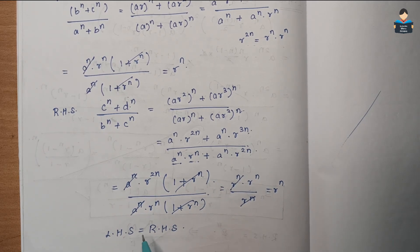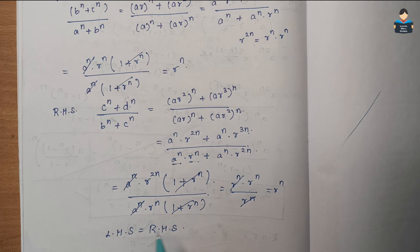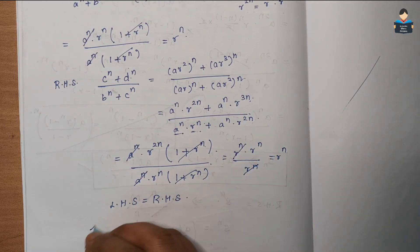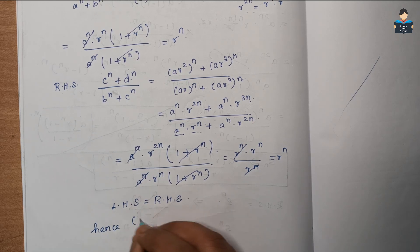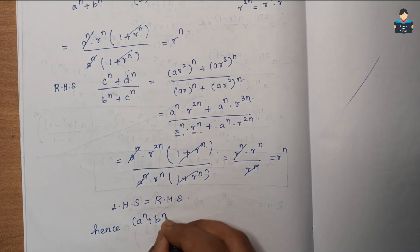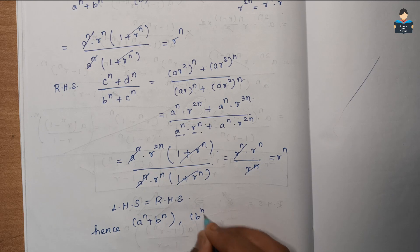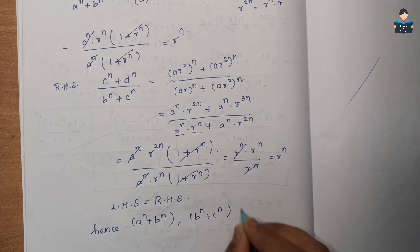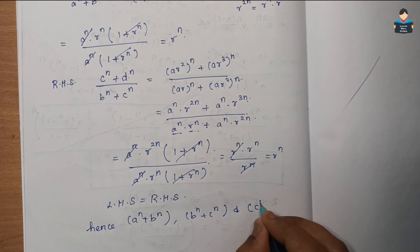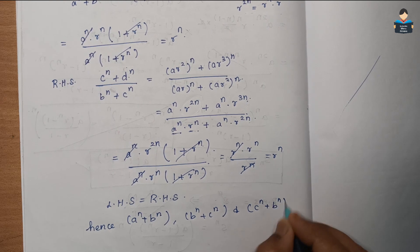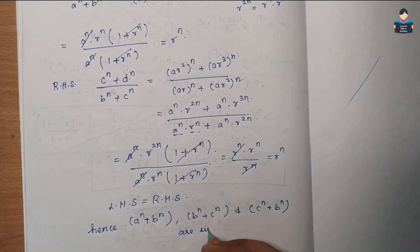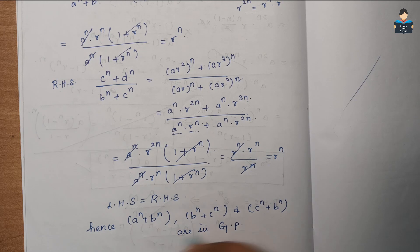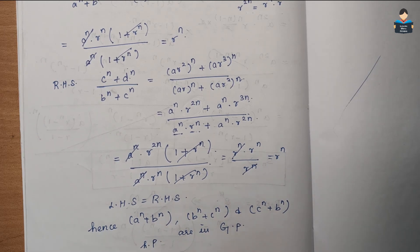Since LHS is equal to RHS, the common ratio is R^n. Hence A^n + B^n, B^n + C^n, and C^n + D^n are in GP. Hence proved.